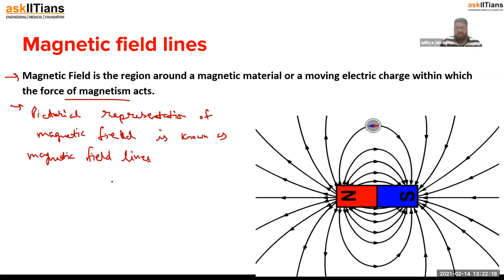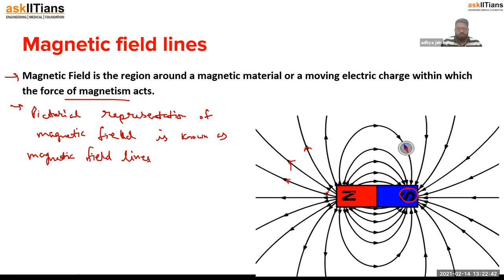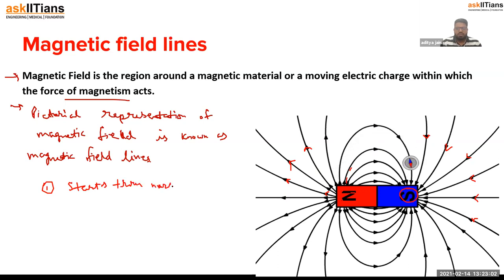There are some important properties of magnetic field lines. The first property is that magnetic field lines start from the north pole. You can see these are the field lines — the arrows show the direction — they start from the north pole, go in a curved path towards the south pole, and terminate at the south pole.